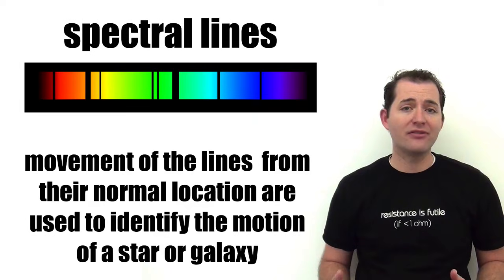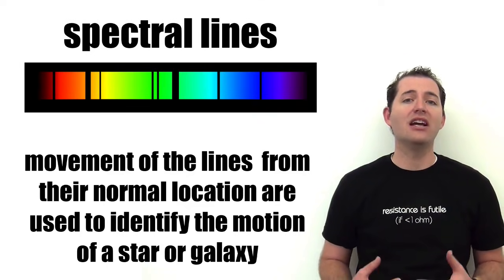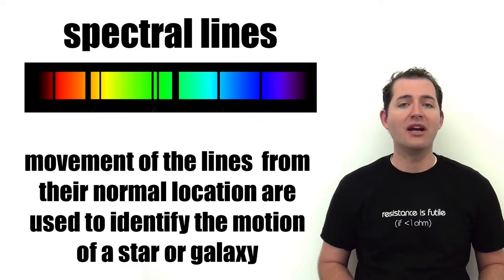We use the spectrum of light from a star or other object to tell if it's moving towards us or moving away from us.